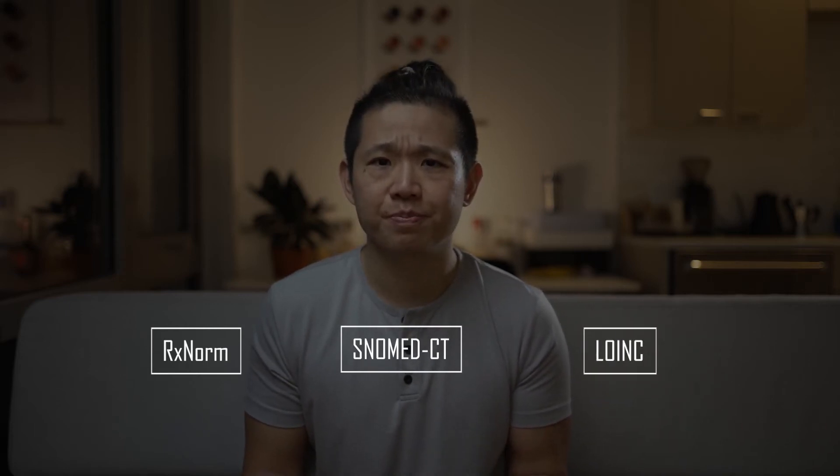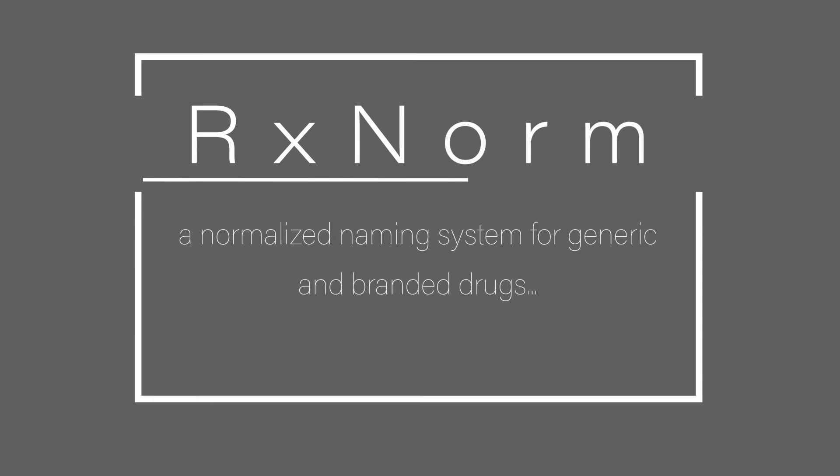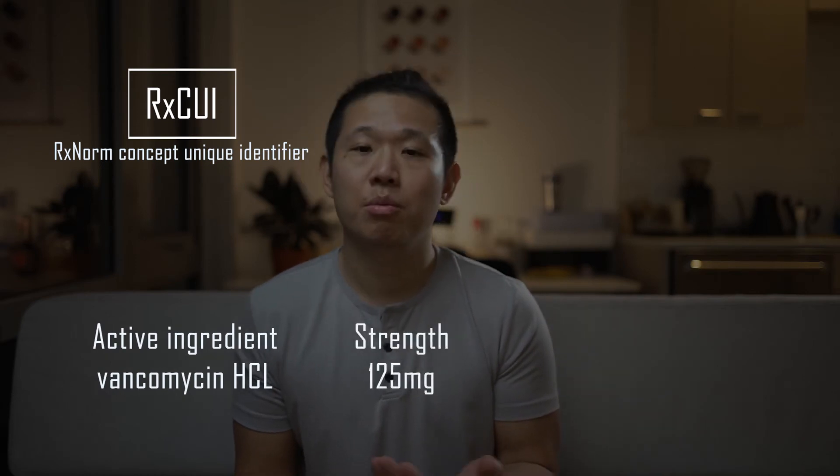Let's start with RxNorm. This is a standard developed by the National Library of Medicine that is two things, and I quote, a normalized naming system for generic and branded drugs, and a tool for supporting semantic interoperation between drug terminologies and pharmacy knowledge-based systems. Drugs in this standard are all assigned a RxNorm concept unique identifier, aka RxCUI, which represents a unique combination of a drug's active ingredient, plus strength, plus dosage form.